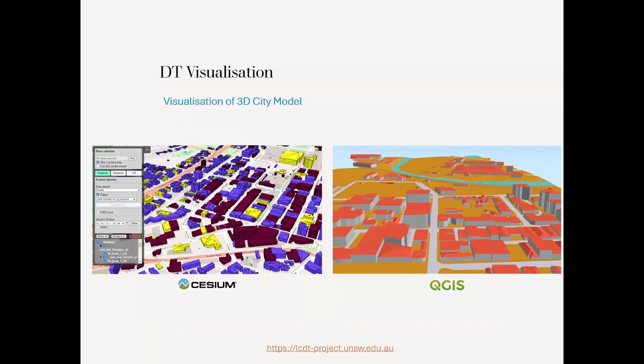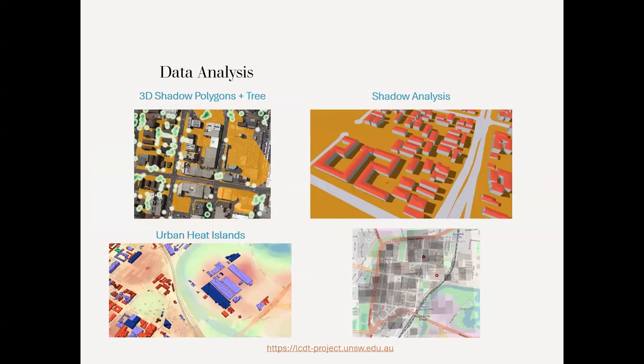From there we could visualize on Cesium and QGIS. For Cesium we had to implement our own way of bringing the data to the viewer because, at least two years ago, there was no native connection to PostGIS, so we implemented something ad hoc. QGIS is straightforward — you just connect to the database and can see the data. We have these two viewers currently; the link at the bottom is based on the Cesium viewer of the project.